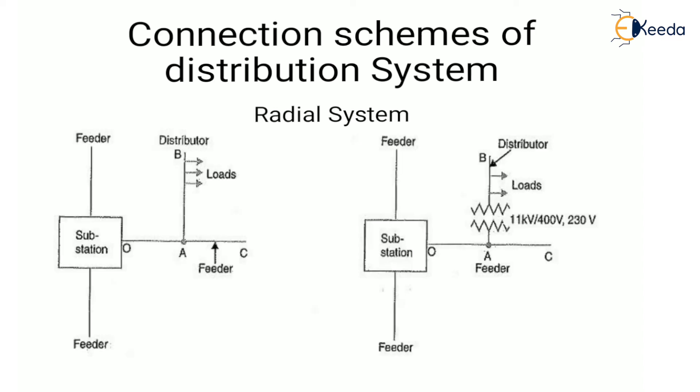Now let's look at the connection schemes of a distribution system. The first is the radial system — feeders are radiated from the substation and feed the distributor at only one end. AB is the distributor. This system is employed when power is generated at a low voltage and the substation is located at the center of the load.